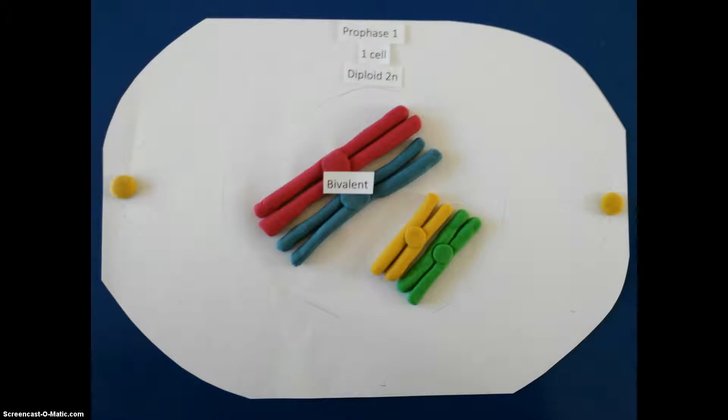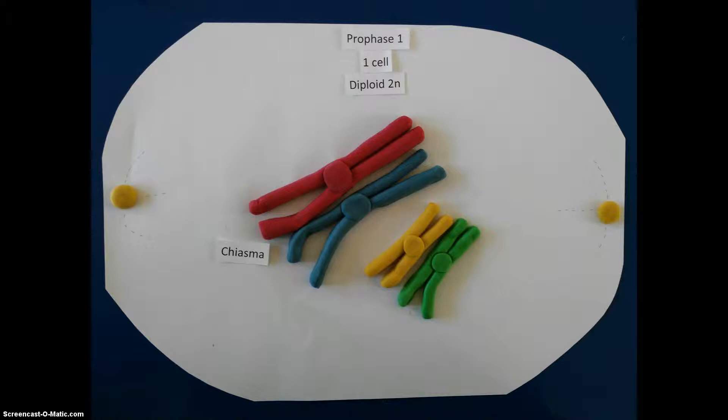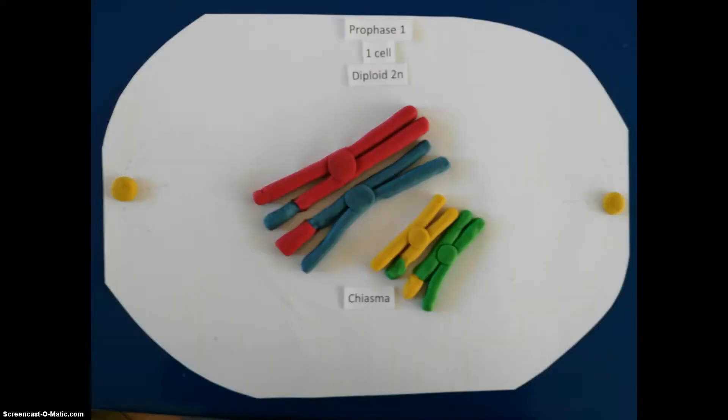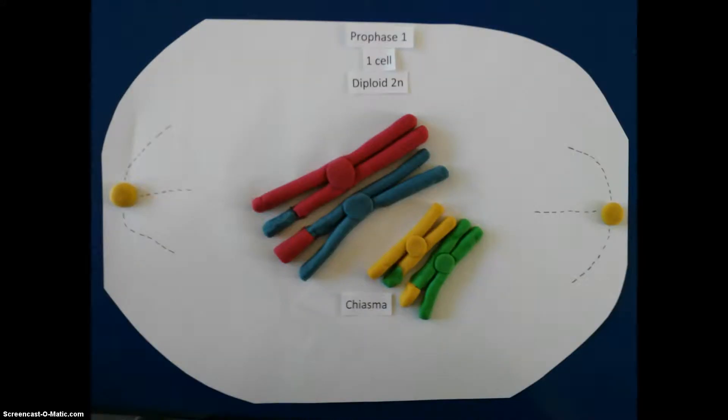Adjacent chromatids from each homologous pair touch. This point is called the chiasma. The DNA is then crossed over and swapped at the chiasma. The spindle between the two centrioles continues to form.